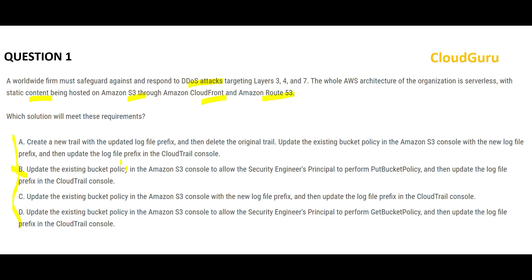Option B is wrong — it says the security principal should get S3 bucket policy access. If there is a theft, the solution cannot be that the cop gets access to that system. Similarly, D is wrong as well because it also gives access to the cop. A theft happened at your home, and instead of catching who did it, the cop is saying 'please provide me access to your home so I can sleep there.'